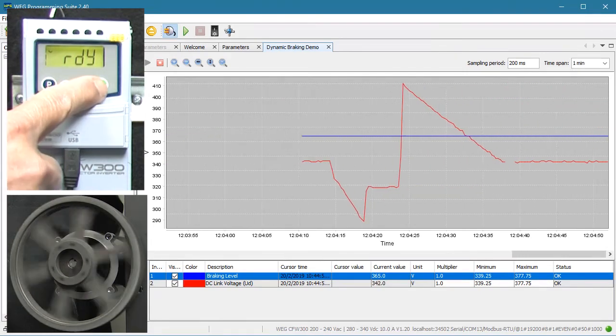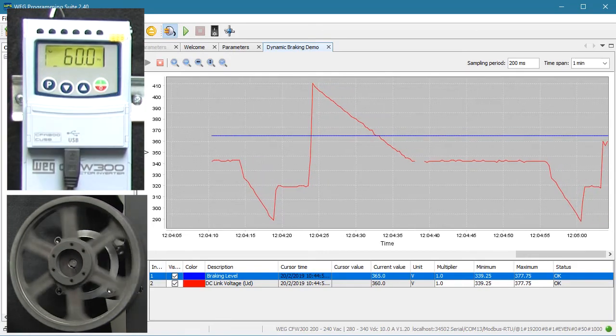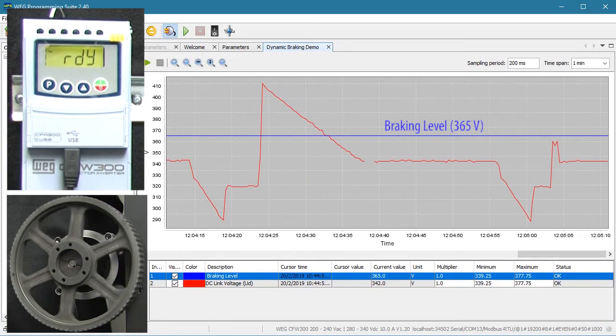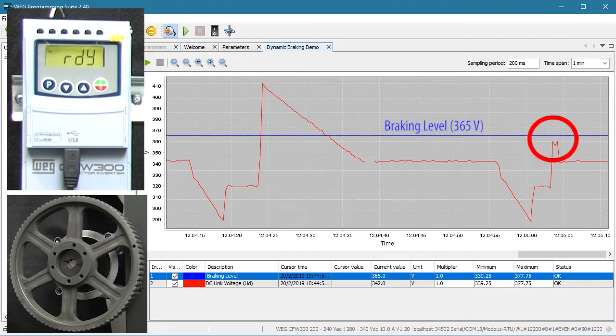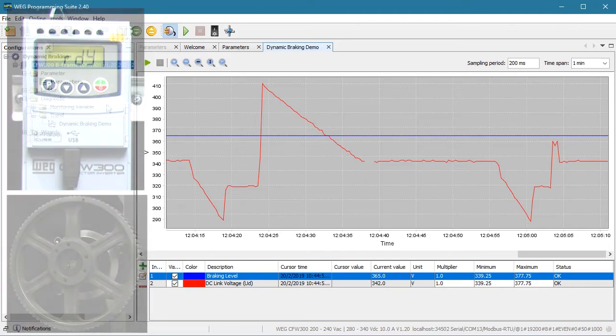hit run, wait for it to ramp up, hit stop. Ah, look, the DC level never got above the braking threshold and the drive stopped without a fault. All simply because we added a braking resistor which gave the dynamic braking circuitry, which was already enabled, a place to send the excess current. Perfect.